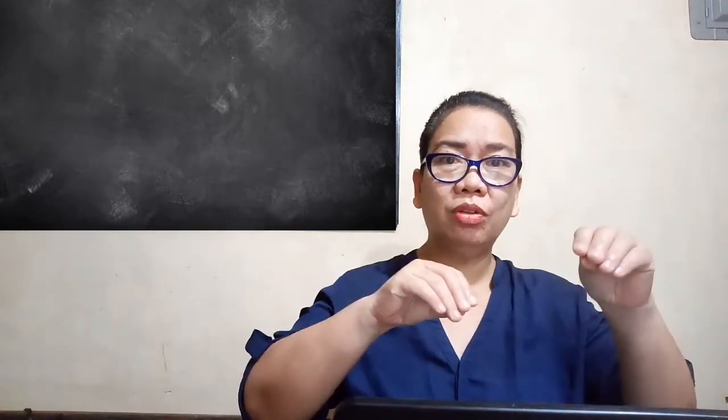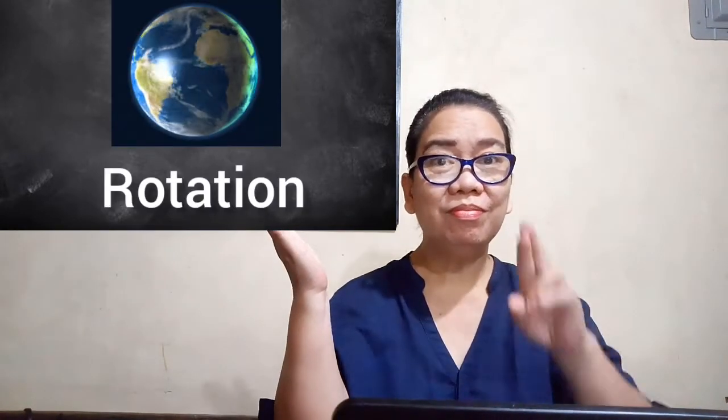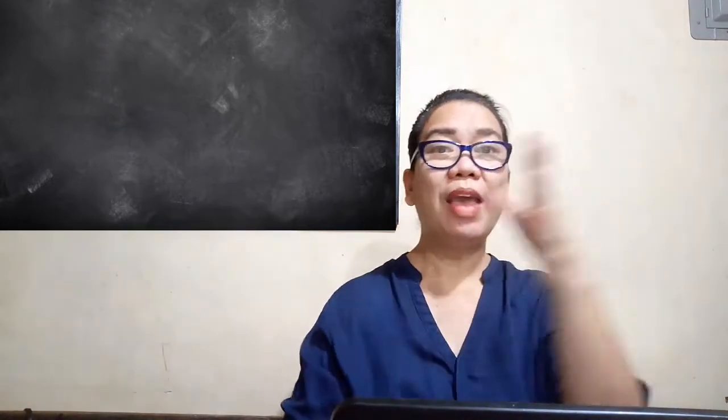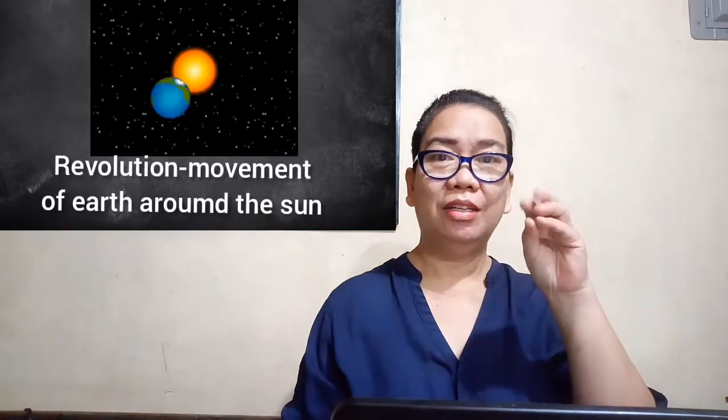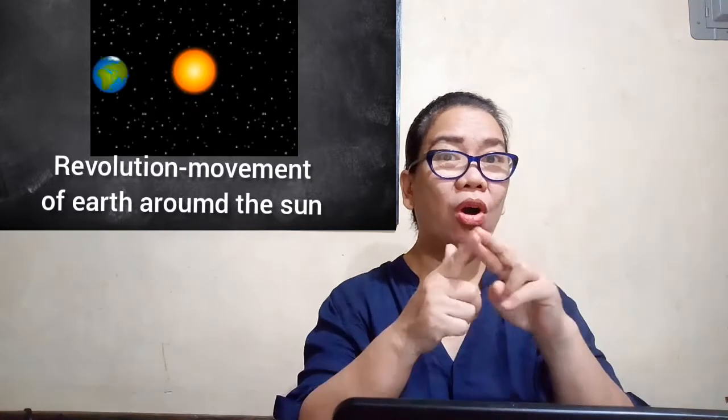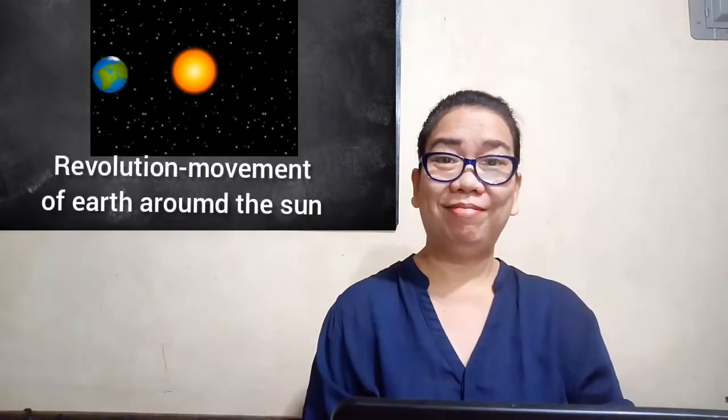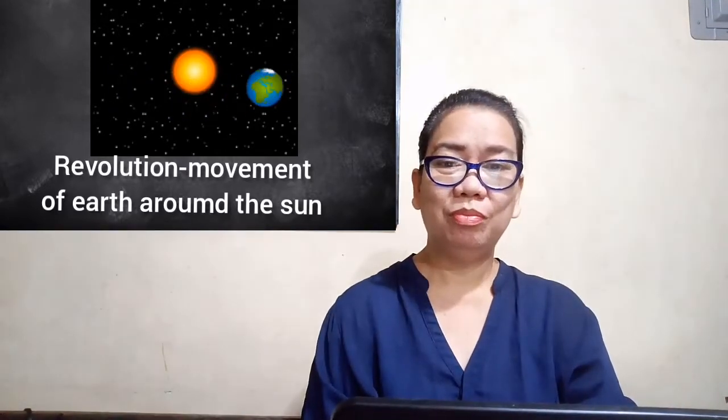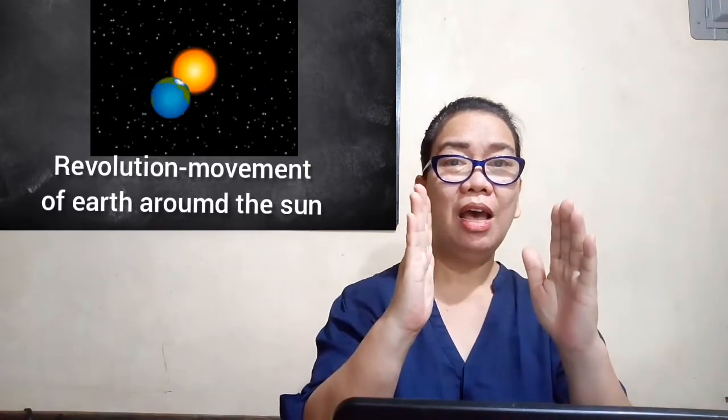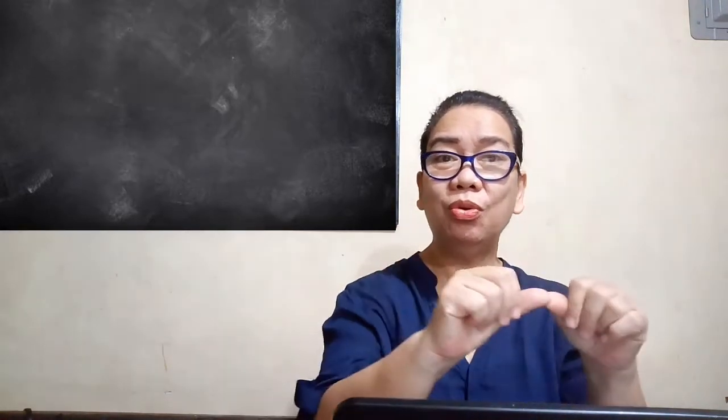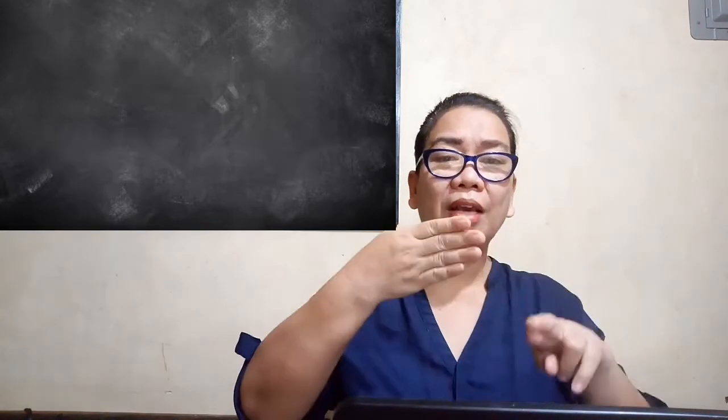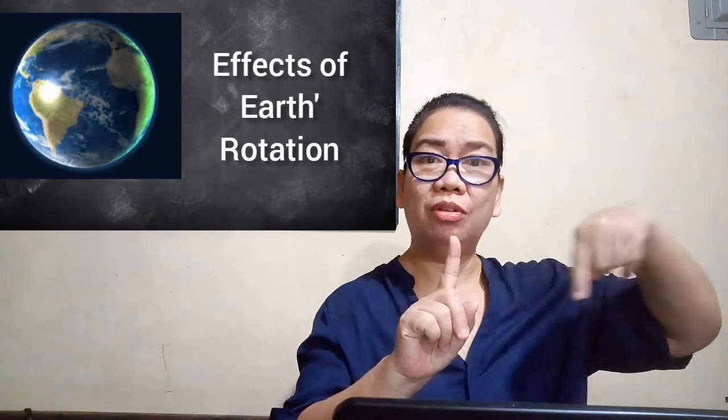And now we all know that Earth has two primary motions. What are those? Rotation and revolution. Now let's continue discussing. What are the effects of Earth's rotation around the Sun?